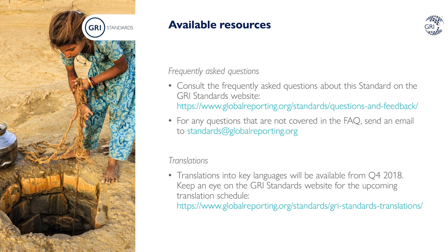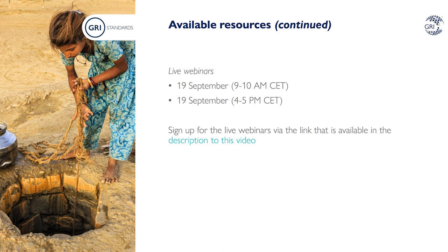If you need more information, please refer to the frequently asked questions about this standard on the GRI Standards website. For any other questions not covered there, you can send an email to standards@globalreporting.org. Translations into key languages will be available from the last quarter of 2018 — keep an eye on the GRI Standards website for the upcoming translation schedule. To learn more, you can join one of the live webinars where GRI will respond to questions from the audience. A morning and an afternoon session are planned on 19 September. Register for these sessions by clicking on the links available in the description of this video.